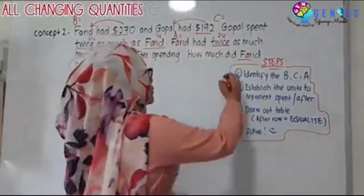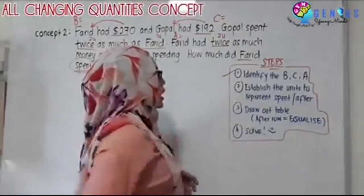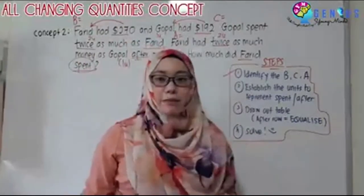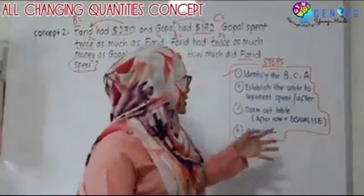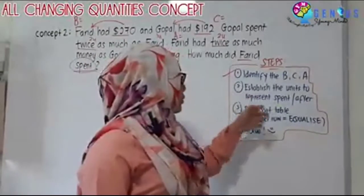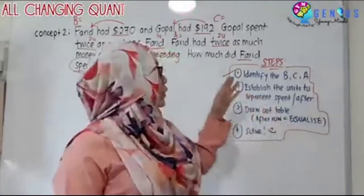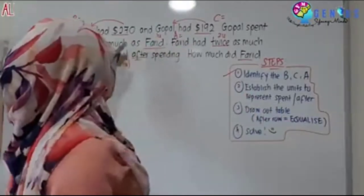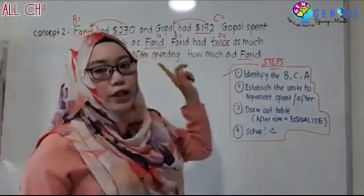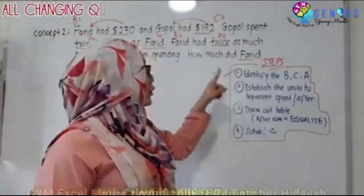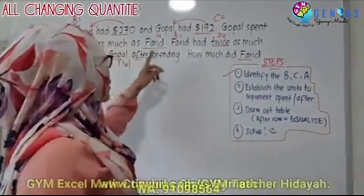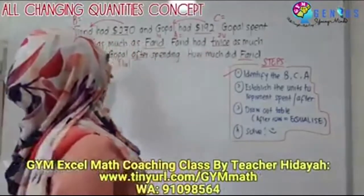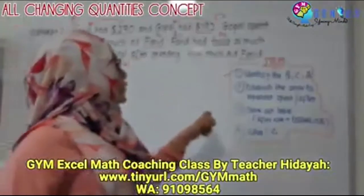We have already identified the BCA and established the units to represent the spent or the after. We know that Gopal spent two units and Farid spent one unit. We know that after spending, Farid has two units and Gopal has one unit.